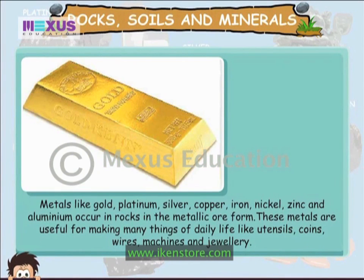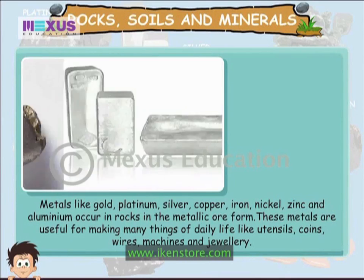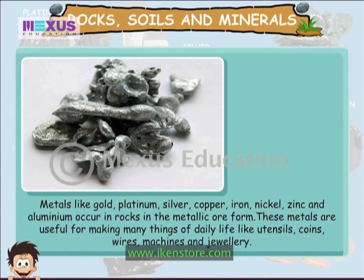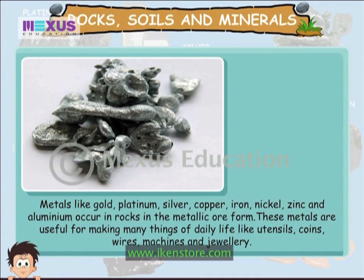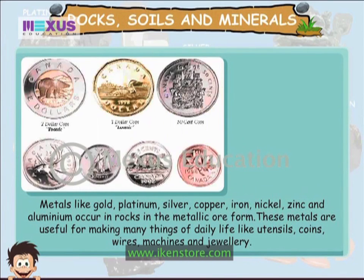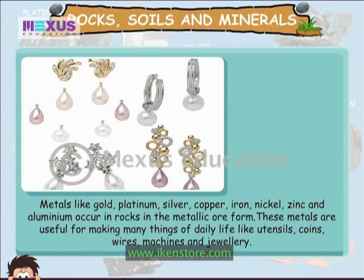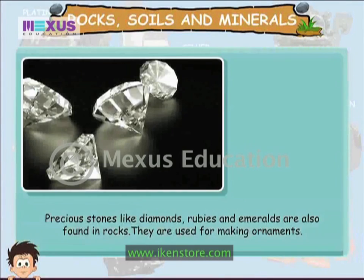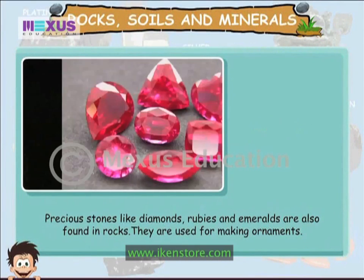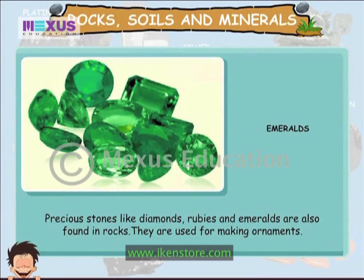Metals like gold, platinum, silver, copper, iron, nickel, zinc and aluminium occur in rocks in the metallic ore form. These metals are used for making many things of daily life like utensils, coins, wires, machines and jewelry. Precious stones like diamonds, rubies and emeralds are also found in rocks and are used for making ornaments.